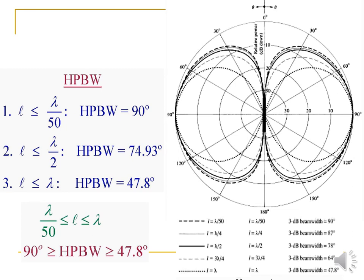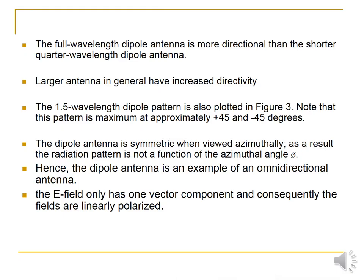The half power beam width: when L ≤ lambda/2, HPBW is 90°; when L ≤ pi/2 (lambda/2), HPBW is 74.93°; and when L = lambda, HPBW is 47.8°. A full wavelength dipole antenna is more directional than the shorter quarter wavelength dipole antenna, and a larger antenna has increased directivity. A 1.5 wavelength dipole antenna has a pattern maximum approximately at ±45°. The dipole antenna is symmetric when viewed azimuthally, so the radiation function is not a function of the azimuthal angle phi. Hence, this dipole antenna is the best example of an omnidirectional antenna.